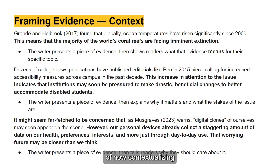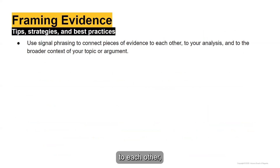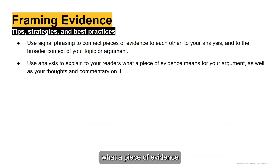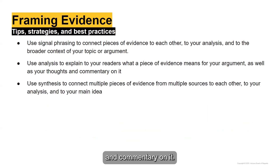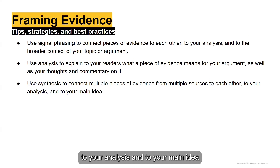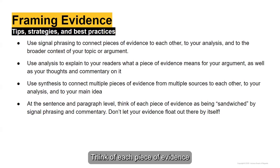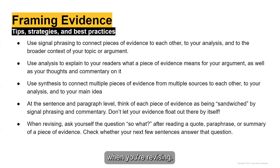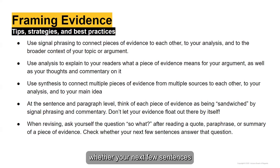These are all examples of how contextualizing your evidence can show readers why it matters. To wrap up this section, here are some tips, strategies, and best practices for framing evidence: Use signal phrasing to connect pieces of evidence to each other, to your analysis, and to the broader context of your topic or argument. Use analysis to explain what evidence means for your argument and to share your commentary. Use synthesis to connect multiple sources to each other and to your main idea. At the sentence and paragraph level, think of each piece of evidence as being sandwiched by signal phrasing and commentary — don't let your evidence float out there by itself. When revising, ask yourself "so what?" after reading a quote, paraphrase, or summary, and check whether your next few sentences answer that question.